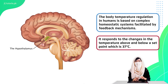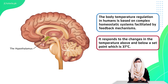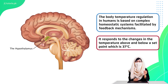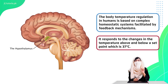Now let me talk about temperature regulation. We have a part of the brain called the hypothalamus that is responsible for temperature regulation and maintaining the body's conditions. When we have a temperature change, it is the hypothalamus which will maintain the temperature in the body.